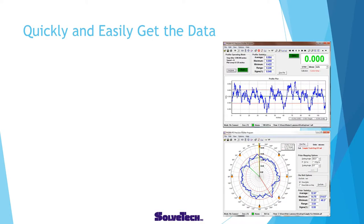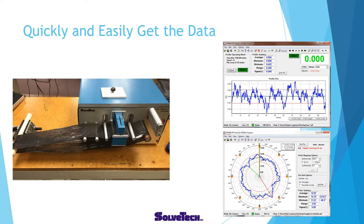Our goal is to quickly and easily get the data. We scan the strip and can look at it linearly or in a polar plot depending on the situation. Usually the linear plot is for a roll or cast film, and the polar plot is for blown film.